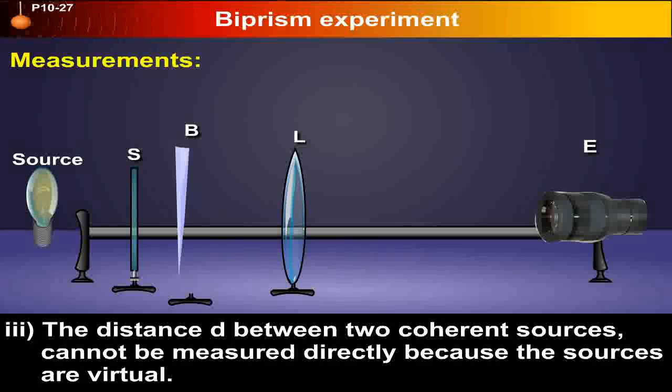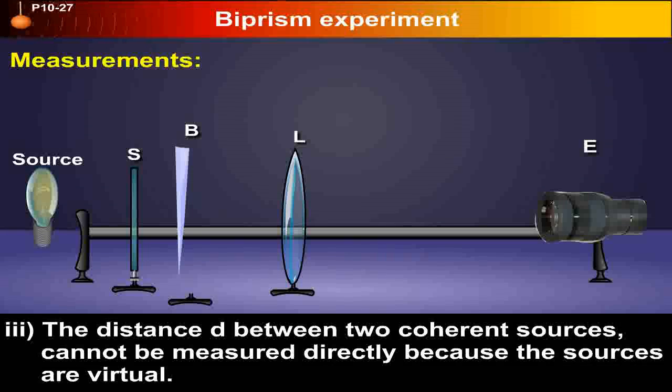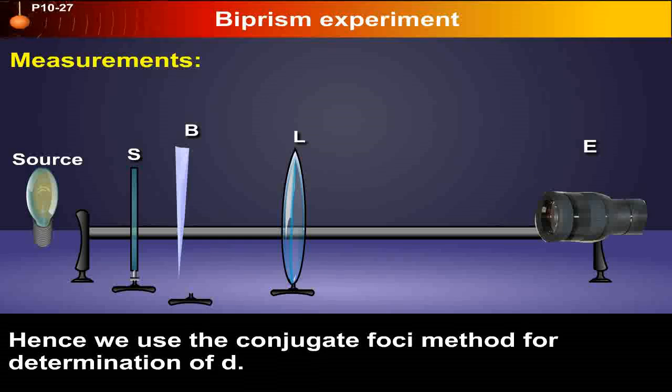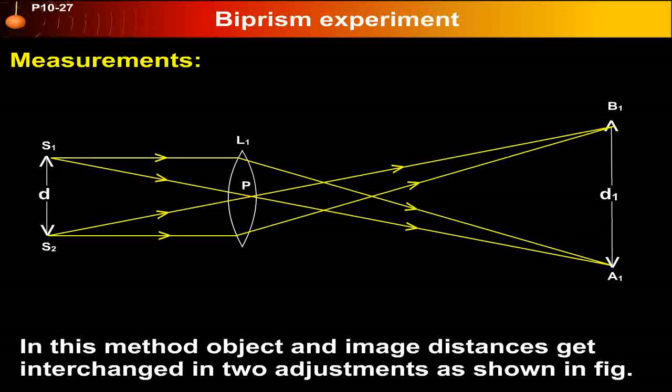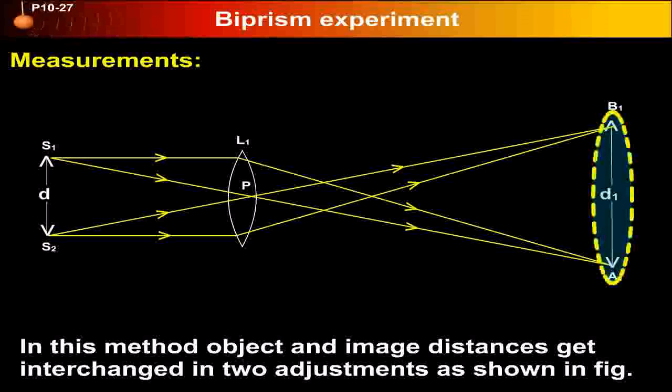Three, the distance d between two coherent sources cannot be measured directly because the sources are virtual. Hence we use the conjugate foci method for determination of small d.